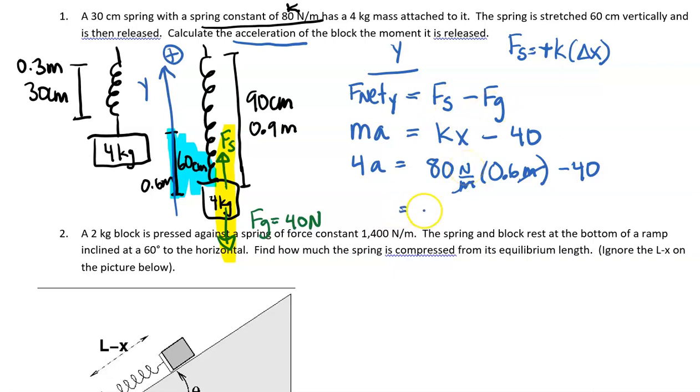We are left with, let's see. Oh my goodness, I did a silly mistake. 80 times 0.6 is 48 Newtons. Take away 40 Newtons. So 4a. Do some fun old math. 48 minus 40 is 8. And then 4a equals 8. So then a will be 2 meters per second squared.